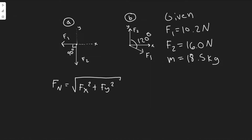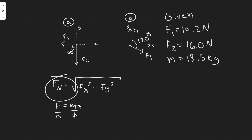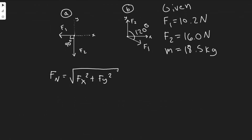In order to find the acceleration, we know F equals ma, so we can just divide the force by the given mass which is 18.5 kg. Whatever value we find for net force, we divide by the mass and that gives us our acceleration. Let's go ahead and start with part A.